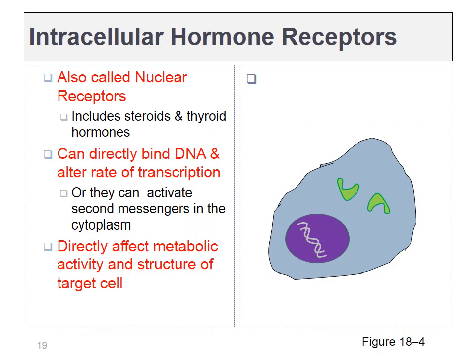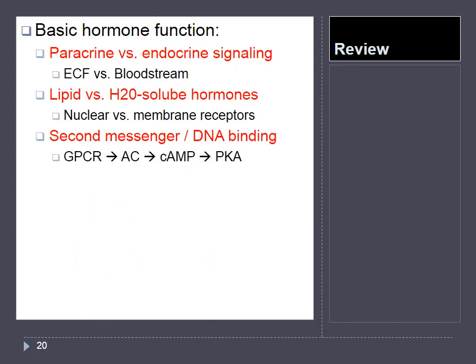Steroid hormone receptors are frequently located inside of the cell, because lipid soluble hormones can freely cross the plasma membrane to bind to these receptors. When that happens, the receptors typically dimerize, move into the nucleus, and bind to DNA to alter gene transcription. Those are some of the basics of hormone signaling. We'll come back to paracrine versus endocrine, and we'll definitely see lipid soluble versus water soluble hormones, and second messengers in action.